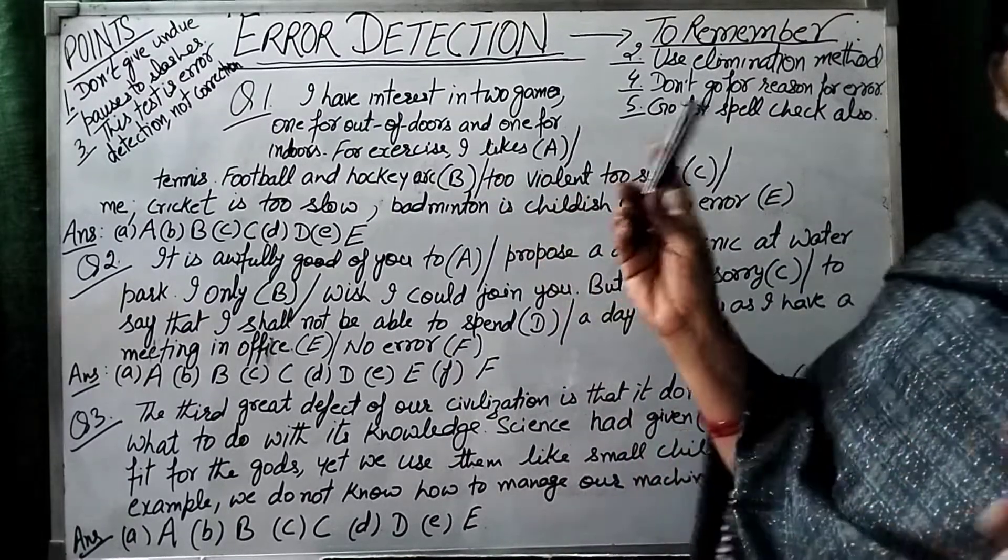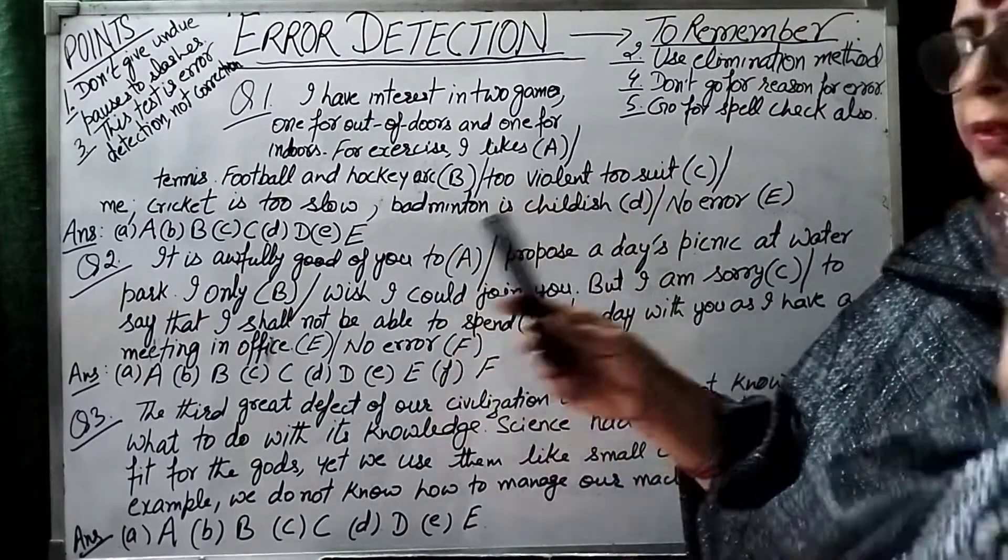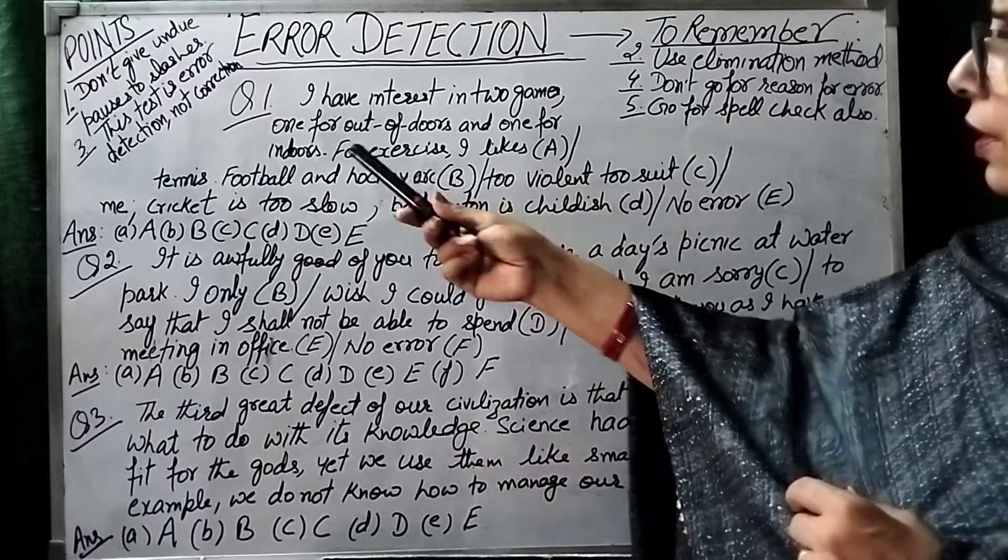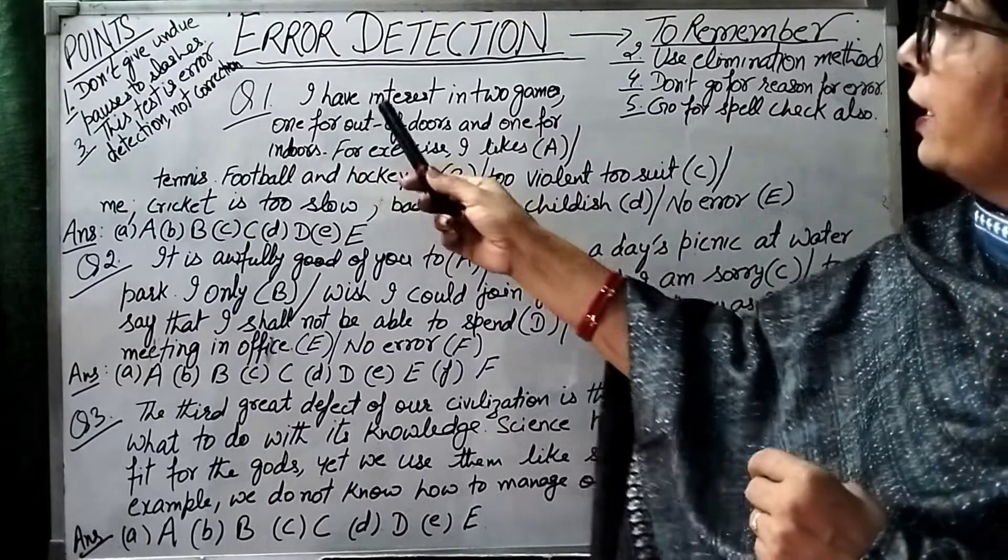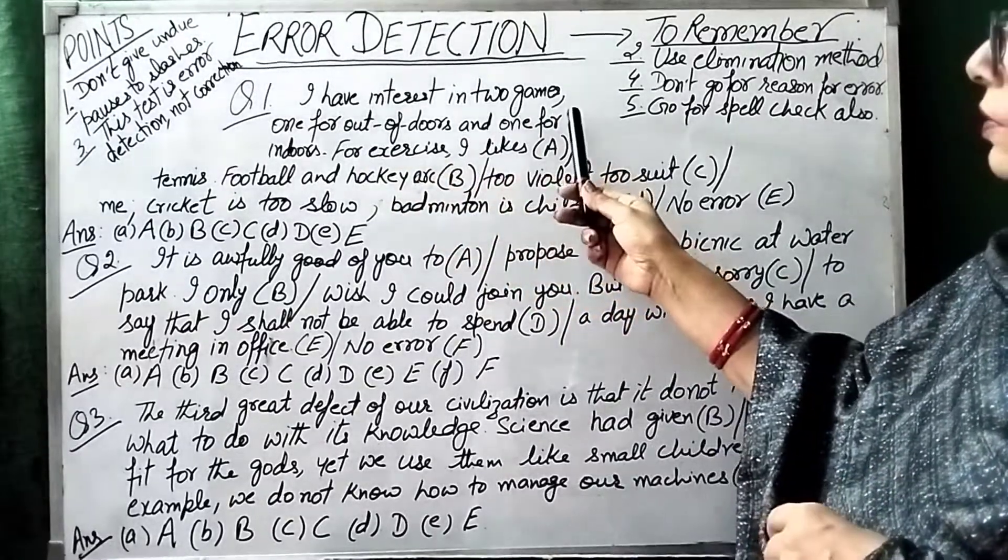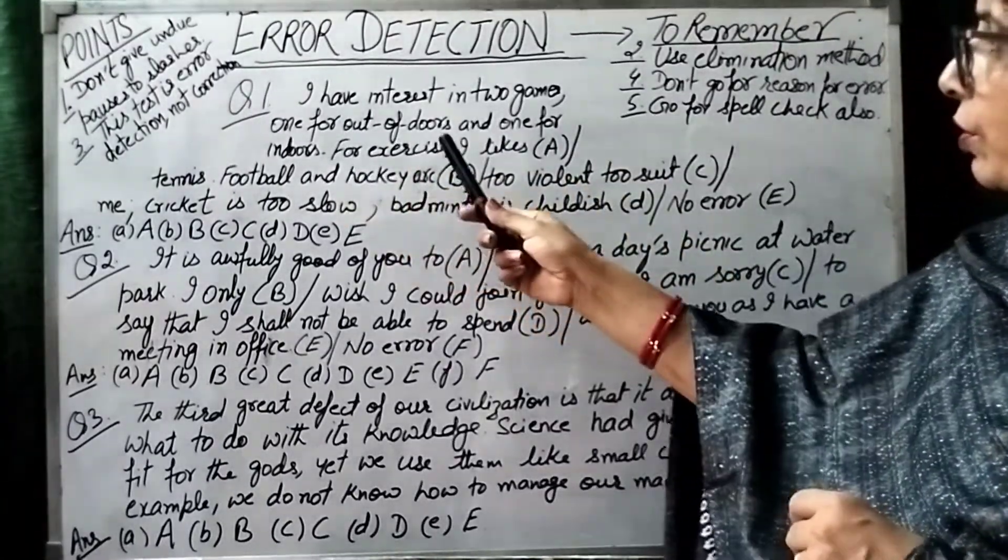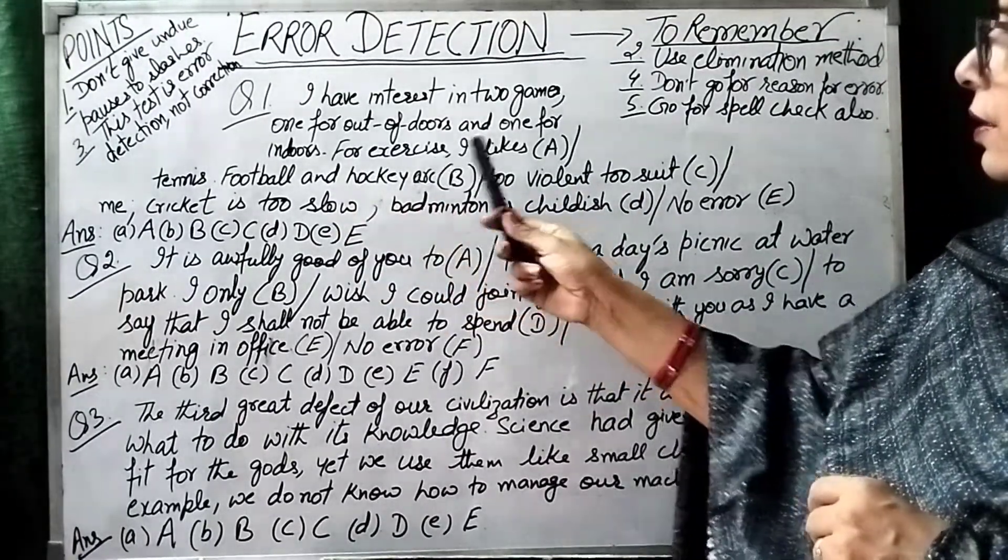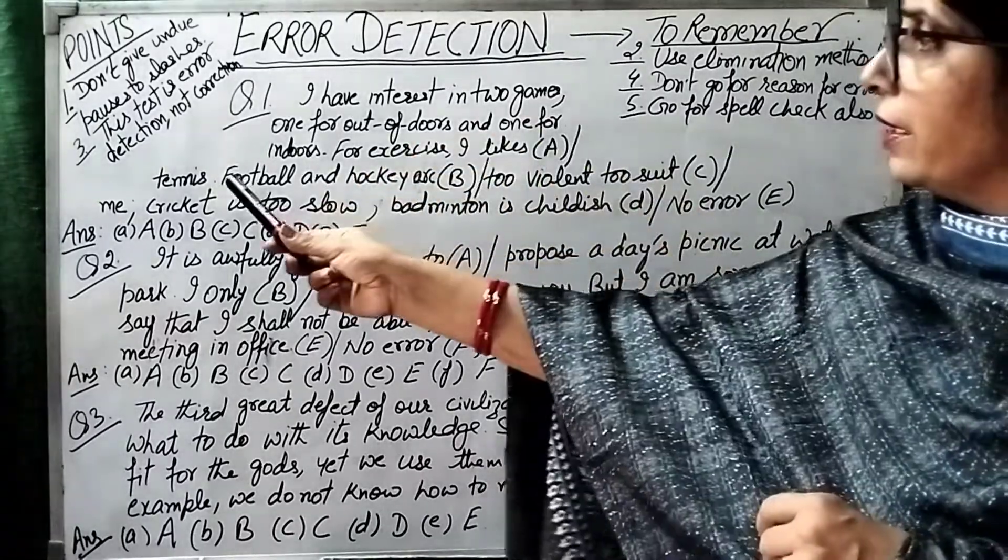So first of all, let's start. I have three types of examples. It is a little practice that you will get more. First, let's start. I have interest in two games. One for outdoors and one for indoors. For exercise, I like tennis.